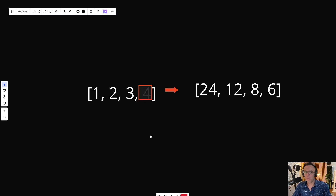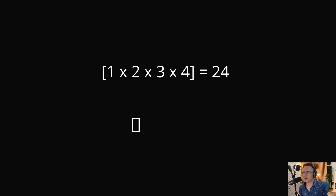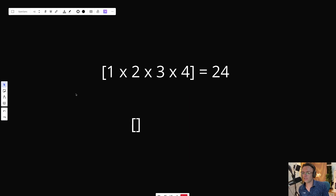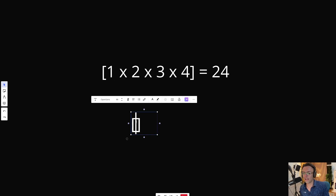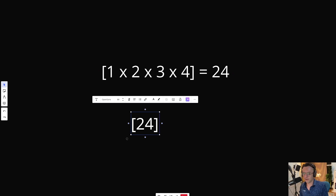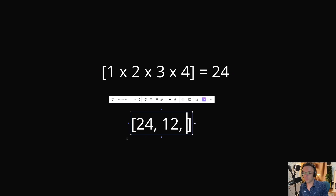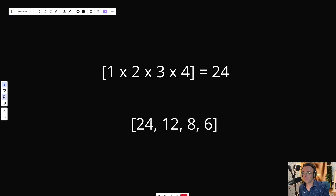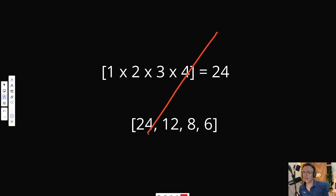But how exactly are we going to build an algorithm to do that? There are multiple ways to solve this problem. The easiest way is to just multiply every single element and divide by that element. Our array was 1, 2, 3, 4. If we multiply all elements we get 24, and dividing by each element gives the result we want: 24÷1=24, 24÷2=12, 24÷3=8, 24÷4=6. But LeetCode will not allow us to use division to solve this problem.